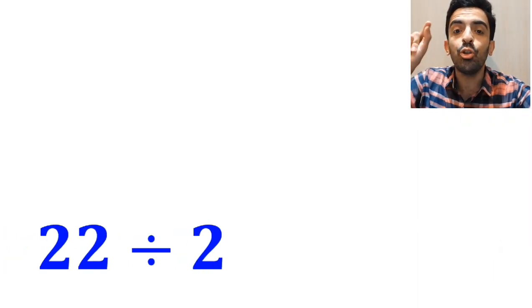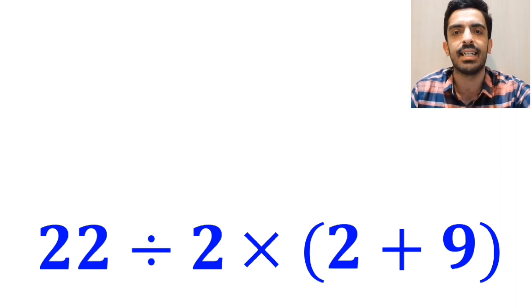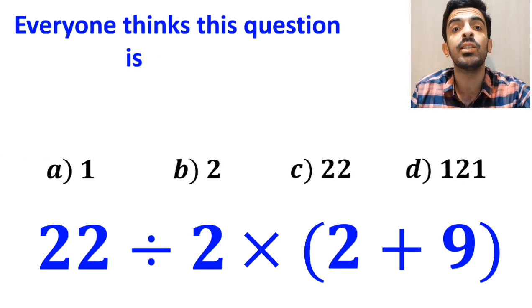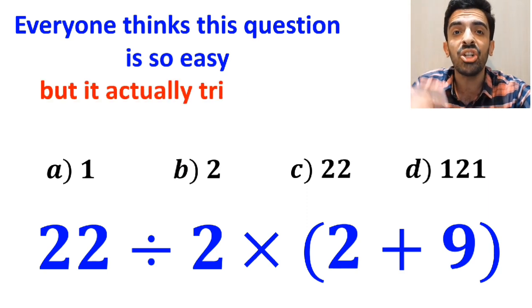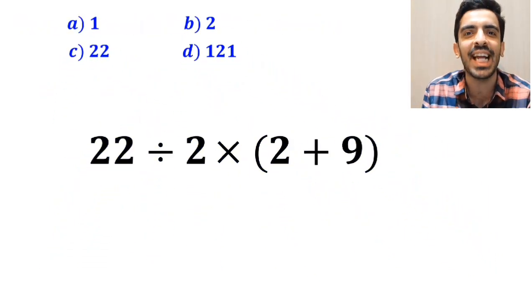What is the value of the expression 22 divided by 2 times open parenthesis 2 plus 9 close parenthesis? Which option do you think is the correct answer to this question? Everyone thinks this question is so easy, but it actually tricks a lot of people. Let's take a closer look and solve it together.